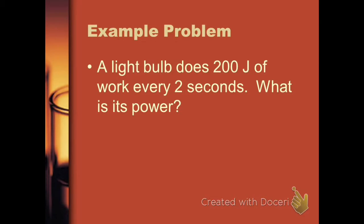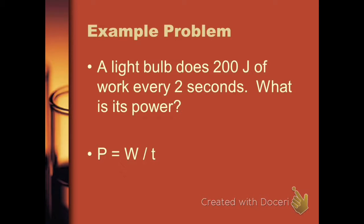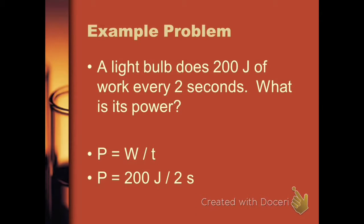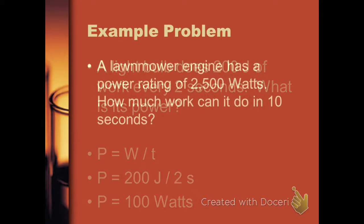Here's a sample problem. A light bulb does 200 joules of work every 2 seconds. What is its power? Power is work divided by time. The work done is 200 joules and the time is 2 seconds. 200 divided by 2 is 100 — 100 watts of power.